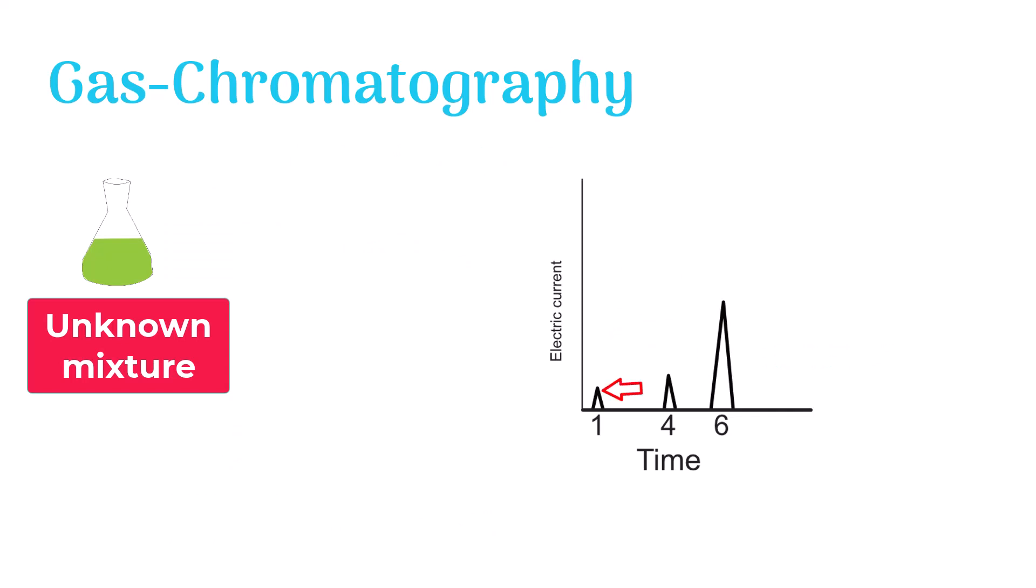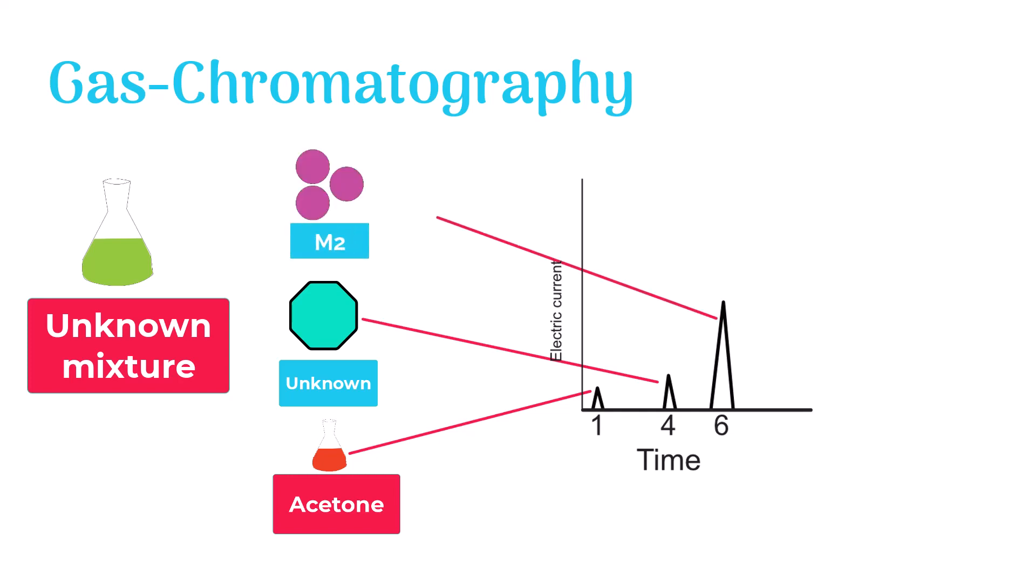So it means the first peak in this graph represents acetone, the second peak represents some unknown component of the mixture and the third peak represents M2 component of the sample. So this unknown mixture contains acetone and M2 molecules but lacks M1 molecules.